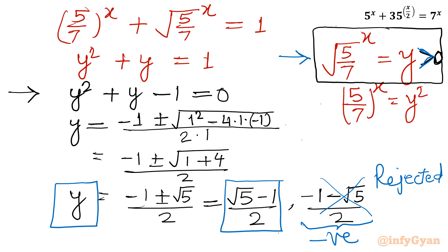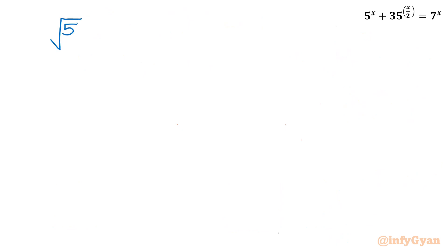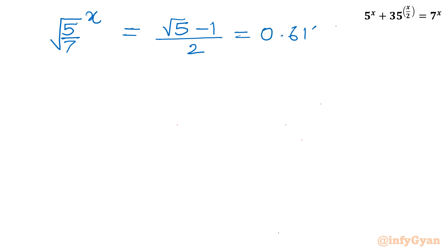And what is y? It is (√5/7)^x. So (√5/7)^x = (√5 − 1) / 2, which has a decimal value of approximately 0.618. I can write the left side as (5/7)^(1/2) raised to the power x, i.e., (5/7)^(x/2) = 0.618.